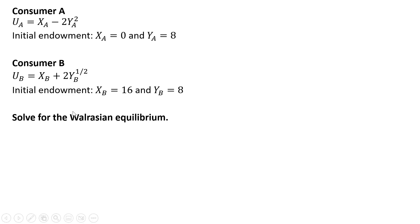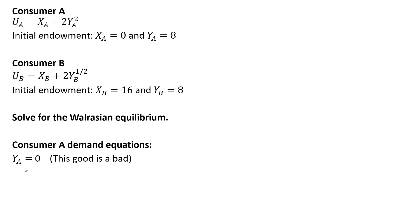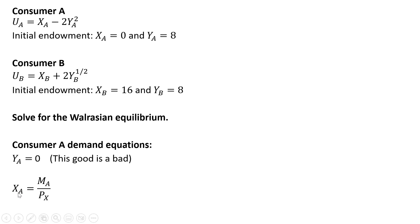We want to solve for the Walrasian equilibrium. First we get the demand equations from consumer A. Good Y is a bad for consumer A, so the consumer does not want to buy any units of good Y. The demand for good Y is 0. As a result, the consumer will spend all income on good X, and the demand for good X will be the money income divided by the price of good X.